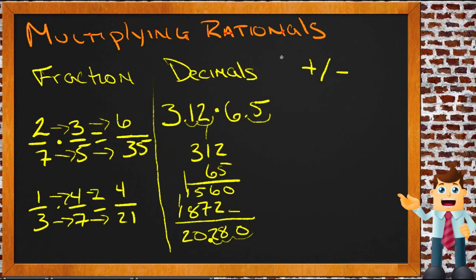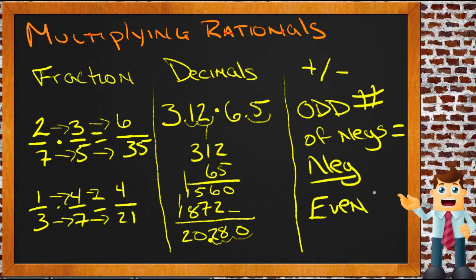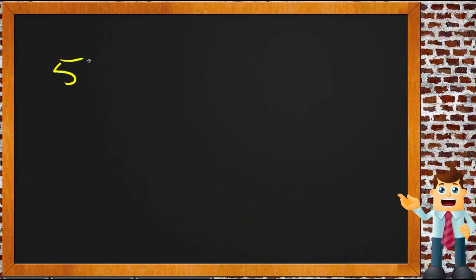Multiplying positive and negative numbers is the easiest one of all. If there is an odd number of negatives, your answer is negative. If there's an even number of negatives, your answer is positive. For example: 5 times negative 2 times 1 times negative 1. 5 times 2 is 10, times 1 is 10, times 1 is 10.